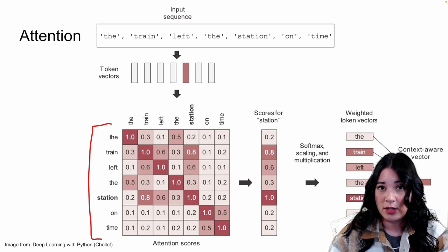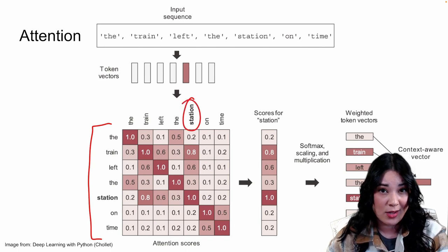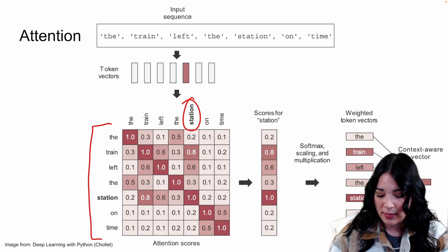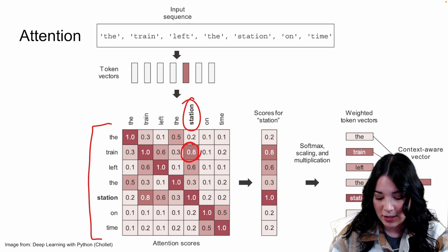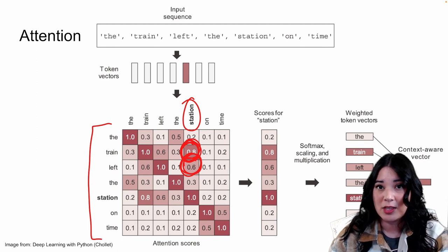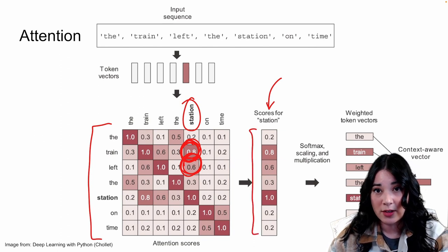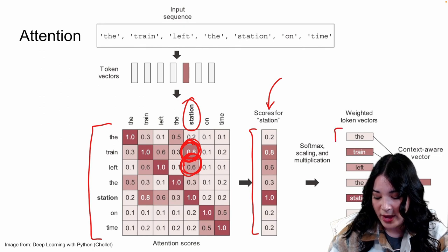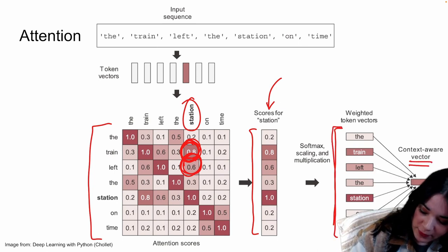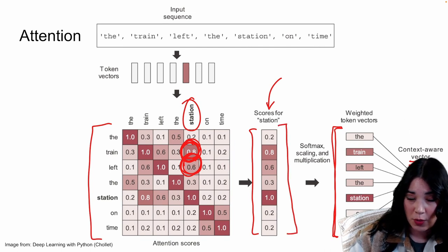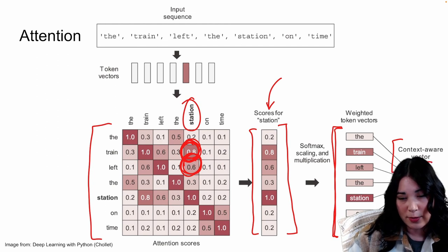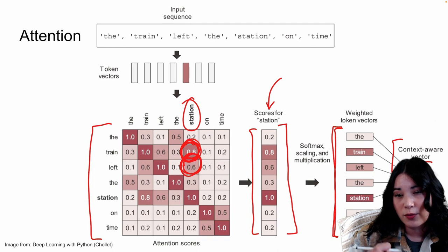For instance, in the sentence 'the train left the station on time,' we don't necessarily know what type of station it's talking about — is it a space station, a radio station, or a train station? You can see from this matrix that when processing the word 'station,' we have very high attention values on the words 'train' and 'left,' because those give us good context that helps us understand what type of station this might be. If we pull a column from this matrix — like the column for 'station' — we can use these values as weights to create a context-aware vector, which takes a combination of all words in the sequence weighted by their attention scores to create that new vector representation including context from surrounding words.